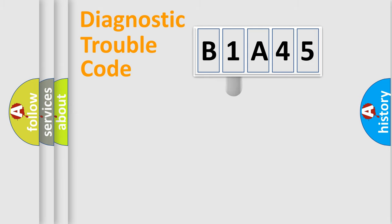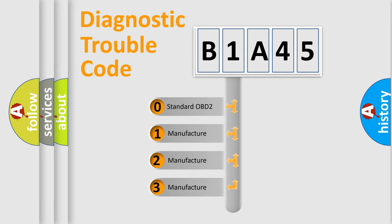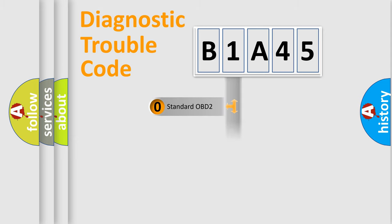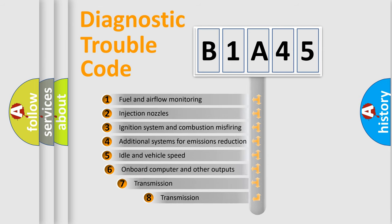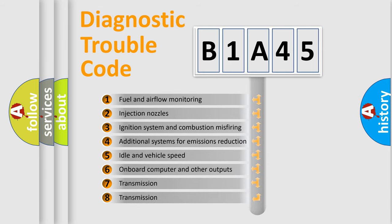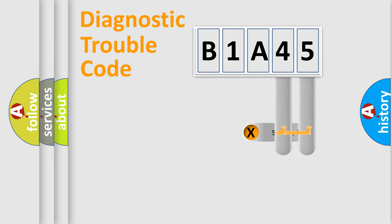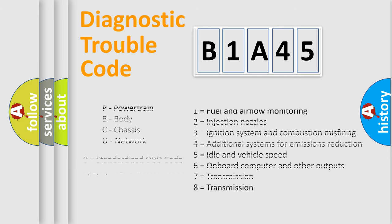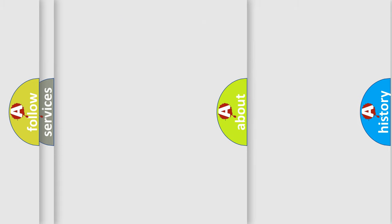This distribution is defined in the first character of the code. If the second character is expressed as zero, it is a standardized error. In the case of numbers 1, 2, or 3, it is a more specific expression of a car-specific error. The third character specifies a subset of errors, and this distribution is valid only for the standardized DTC code. Only the last two characters define the specific fault of the group. This division is valid only when the second character is expressed by the number zero.